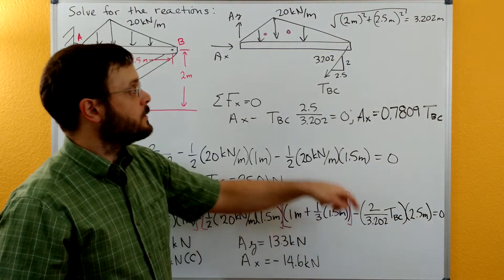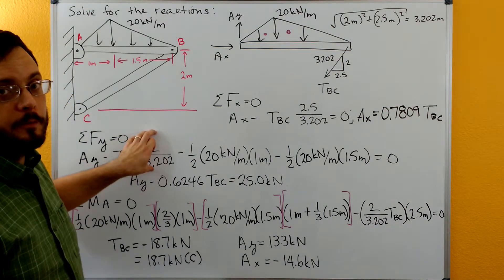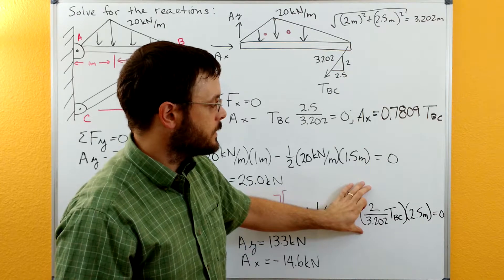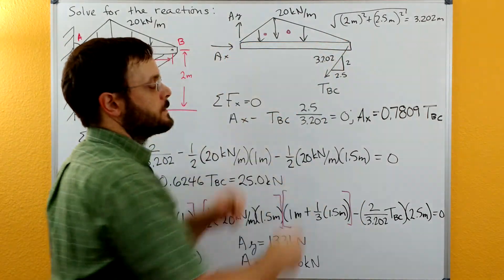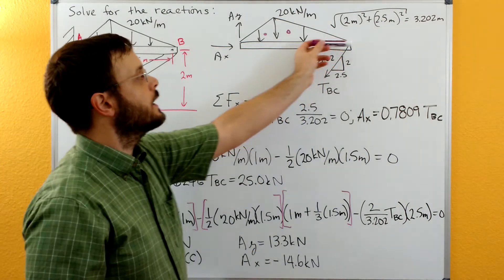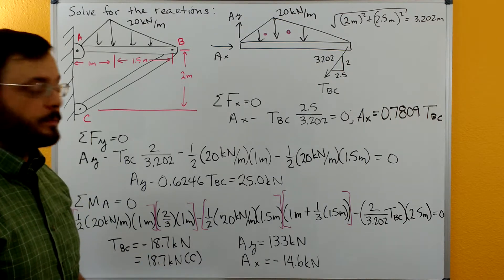And then for our TBC we just need our Y component. So we can grab our Y component out of sum of the forces in the Y. So two over 3.202 times TBC and then multiply that by this X distance back over to A. The X component of TBC has a line of action that goes through A and so it wouldn't contribute a moment.